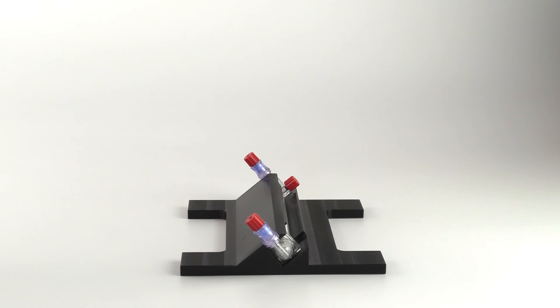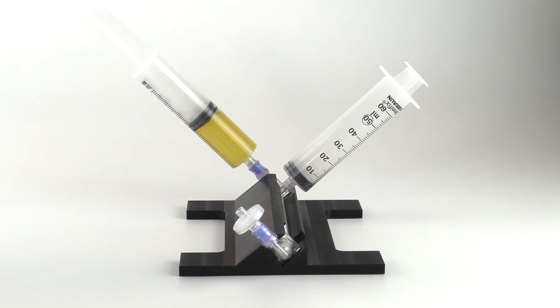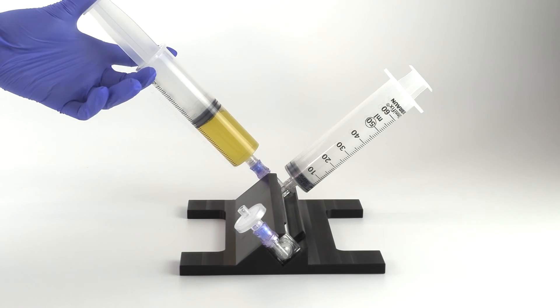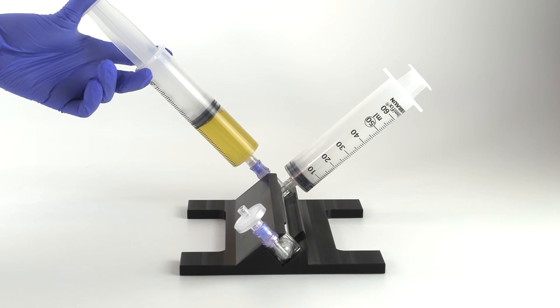To continue, insert the core ultrafiltration device into the base as shown. Attach the platelet-poor plasma syringe to the left port and the air filter to the right. Then attach the 60 milliliter syringe to the effluent port. Prime the ultrafiltration device until solution reaches the air filter.